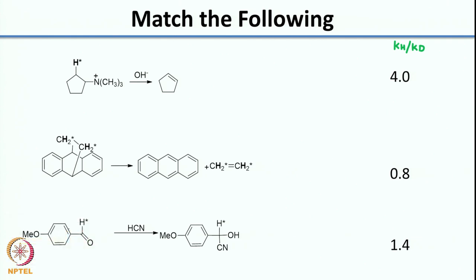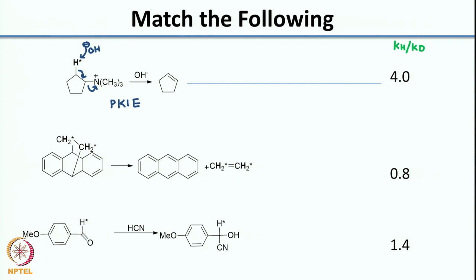In the first case, what is the mechanism of the reaction? What you have here is OH⁻ coming in, deprotonating, and then you have these electrons coming in and eliminating the amine to give you a double bond. What kind of an isotope effect is this? Is this a primary or a secondary kinetic isotope effect? It is a primary kinetic isotope effect. So which of these would be the correct answer? It would be 4.